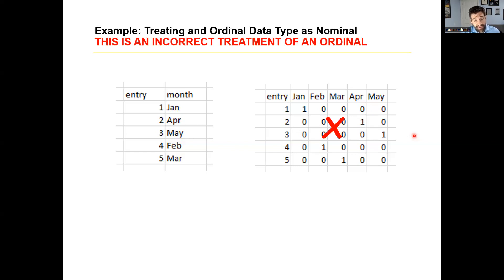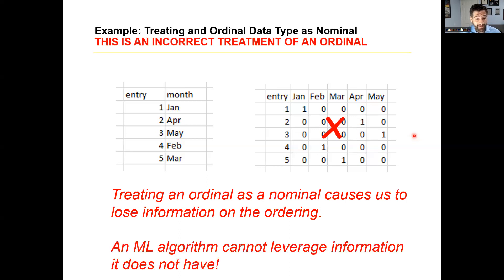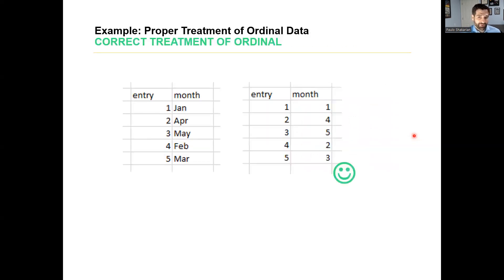With machine learning, we want to avoid making those decisions ourselves as humans. We want to turn it over to the training algorithm to make those decisions for us if that ordering information is important. There's very little reason not to treat ordinal data as the right type of data. If we treat ordinal data as nominal, we lose that ordering information, and a machine learning algorithm cannot leverage information that we don't give it. So let's look at doing this in a more correct way — here we're just assigning the ordinal values with a number based on when the month occurs in the year. This is the correct version.